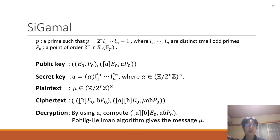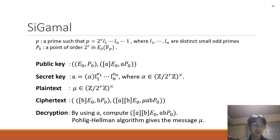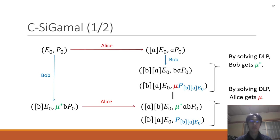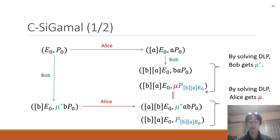Next, I'll explain the construction of CC-GAMMA. CC-GAMMA is a compressed version of C-GAMMA. First, compute this action. It outputs these two values as a public key. Bob computes these two actions. He also computes this point. This blue point is a point which has order 2^r and is defined over F_p.